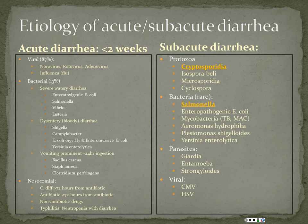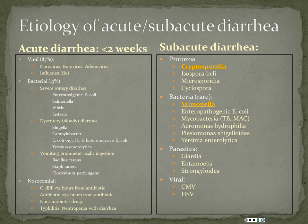When you have watery diarrhea, think of Salmonella, enterotoxigenic E. coli, Vibrio, and Listeria. When patients have vomiting-predominant illness, that's usually from preformed toxins — organisms like Bacillus cereus, Staph aureus, or Clostridium perfringens. So a patient who comes in with vomiting and diarrhea is either viral or a Bacillus cereus / Staph aureus type case.